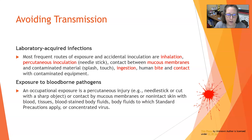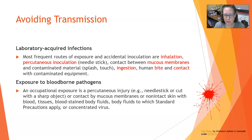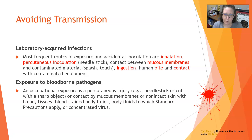An occupational exposure to a blood-borne pathogen is either a percutaneous injury — a needle stick or cut with a sharp object — or contact by the mucous membranes or non-intact skin, such as broken skin with a wound, with blood, tissues, blood-stained body fluids, body fluids to which standard precautions apply, or concentrated virus. That is what exposure to a blood-borne pathogen means.